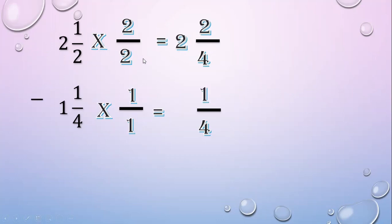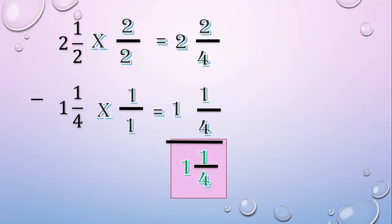Then subtract. 2 minus 1 equals 1. Subtract the numerators: 2 minus 1 equals 1. Copy the denominator: 4. The final answer is 1 and 1 fourth.